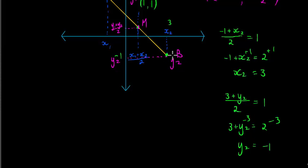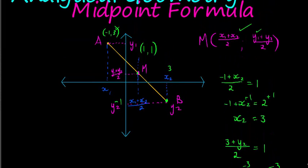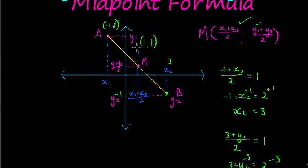We've been able to find the coordinate of B by using the formula, but a little bit backwards. What I want to show you is a quicker way. You could have just asked yourself, how far is it from here to there? I'm going from negative 1 to positive 1, which means this must be 2. So if I go from here to there, that must be 2 as well. So 1 plus another 2 would give me 3.